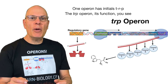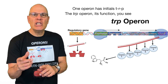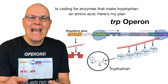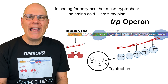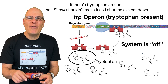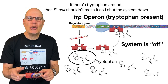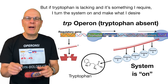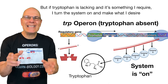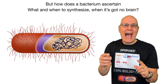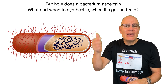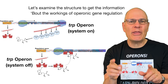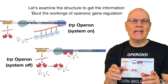One operon has initials TRP — the trp operon. Its function, you see, is coding for enzymes that make tryptophan, an amino acid. Here's my plan: if there's tryptophan around, E. coli shouldn't make it, so I shut the system down. But if tryptophan is lacking and it's something I require, I turn the system on and make what I desire. But how does a bacterium ascertain what and when to synthesize when it's got no brain? Let's examine the structure to get the information about the workings of operonic gene regulation.